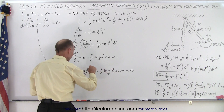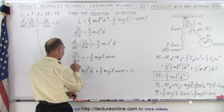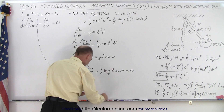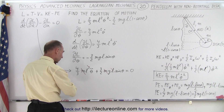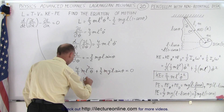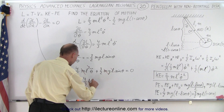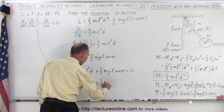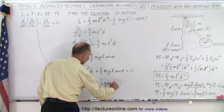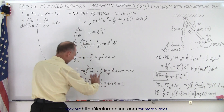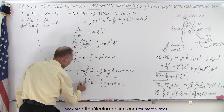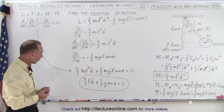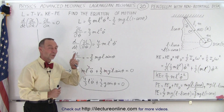We can simplify: the m's cancel and one factor of L cancels. This gives us the equation of motion: (4/3) L θ̈ + (3/2) g sin theta = 0. This is the equation of motion for the pendulum made of a rod with a solid disc fixed at its end.